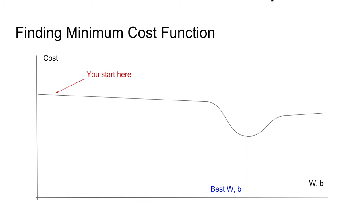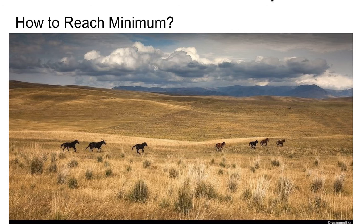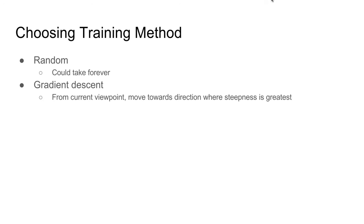If we could solve the cost function, we could easily see where the best w and b are. Unfortunately, most of the time cost functions are difficult to solve. So we just start somewhere — for instance, at the red position. From that viewpoint, we cannot tell which direction to go to reach the minimum. We can choose to use gradient descent, which means from our current viewpoint, we move towards the direction where the steepness downwards is the greatest, and repeat this until we hit the minimum.